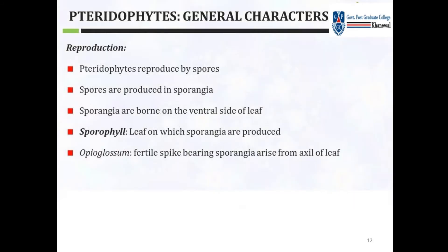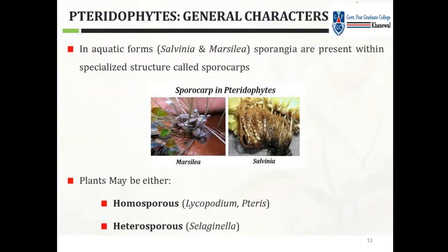Now talking about reproduction: Tracheophytes reproduce by spores. Spores are produced in sporangia. Sporangia are borne on the ventral side of the leaf. The leaf on which sporangia are borne is called a sporophyll. In Ophioglossum, a fertile spike bearing sporangia arises from the axil of the leaf. In aquatic forms like Salvinia and Marsilea, sporangia are present within specialized structures called sporocarps.